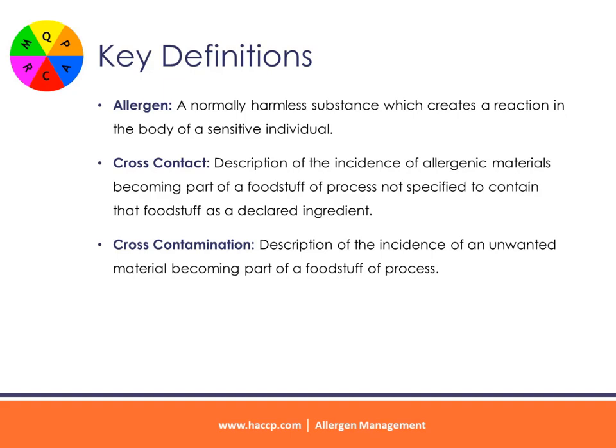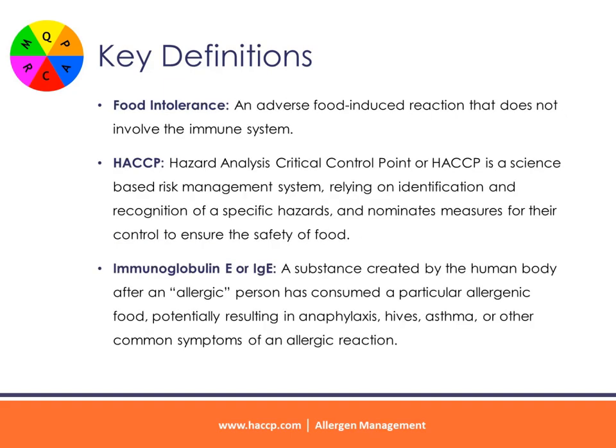Allergen management: key definitions. Allergen — a normally harmless substance which creates a reaction in the body of a sensitive individual. Cross-contact — description of the incidence of allergenic materials becoming part of a foodstuff or process not specified to contain that foodstuff as a declared ingredient. Cross-contamination — description of the incidence of an unwanted material becoming part of a foodstuff or process. Food intolerance — an adverse food-induced reaction that does not involve the immune system.